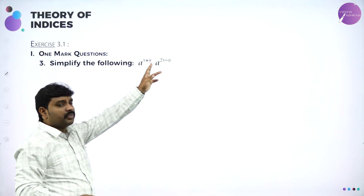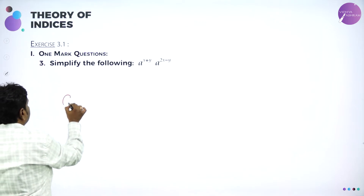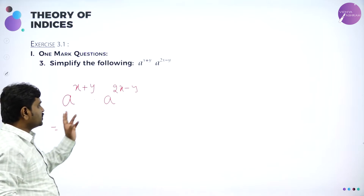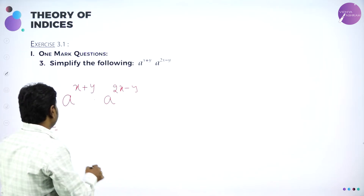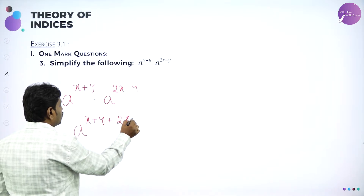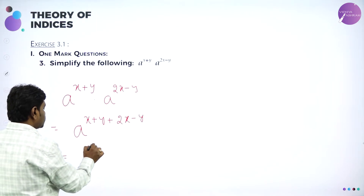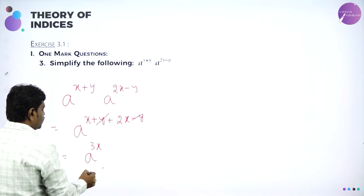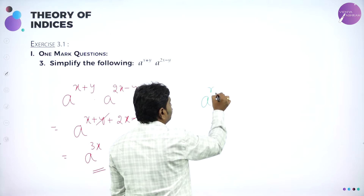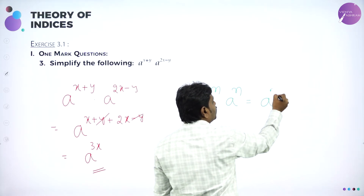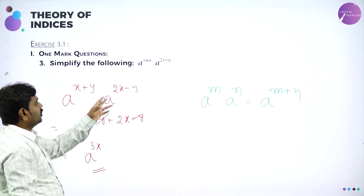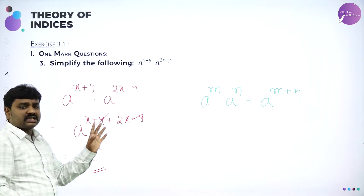Next: a power (x+y) into a power (2x−y). Carefully observe — this is in the form a power m into a power n, and a power m into a power n equals a power m plus n. So I can write a power (x + y + 2x − y). That gives a power 3x, since y minus y cancels and x plus 2x becomes 3x. The law used: if the bases are same, add the powers.